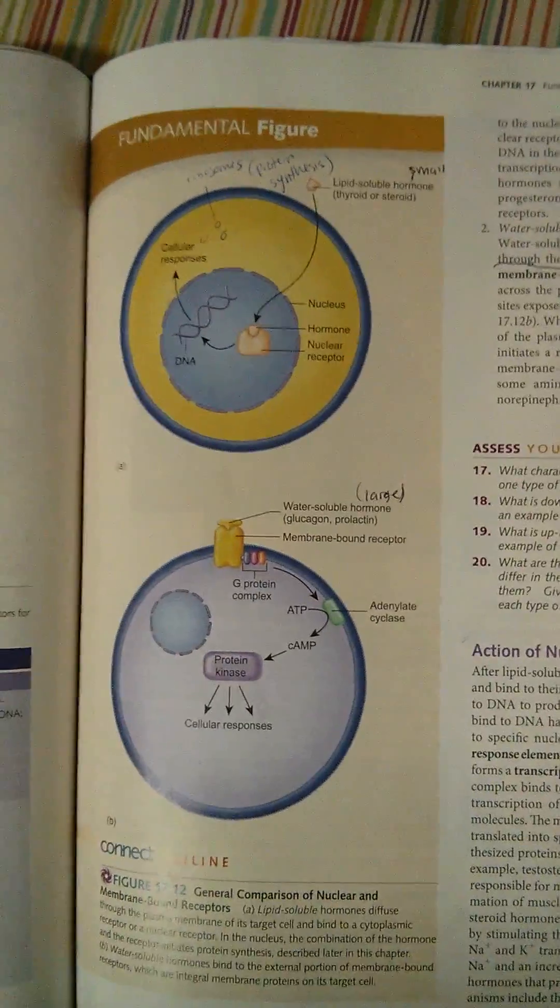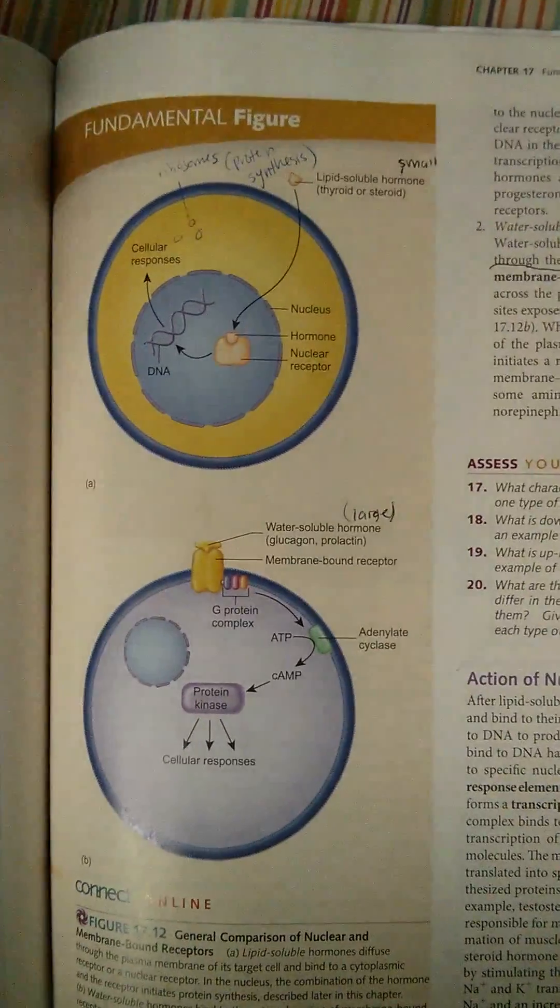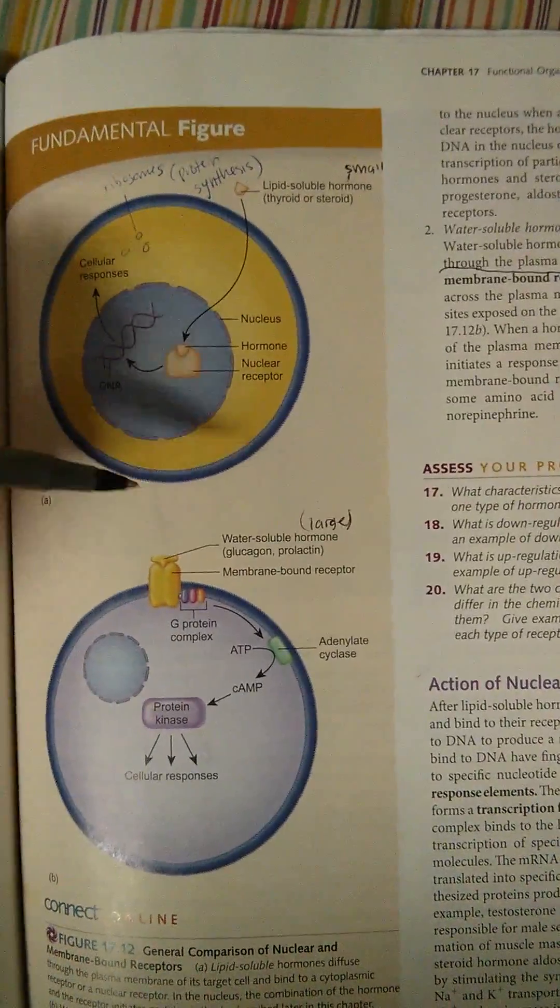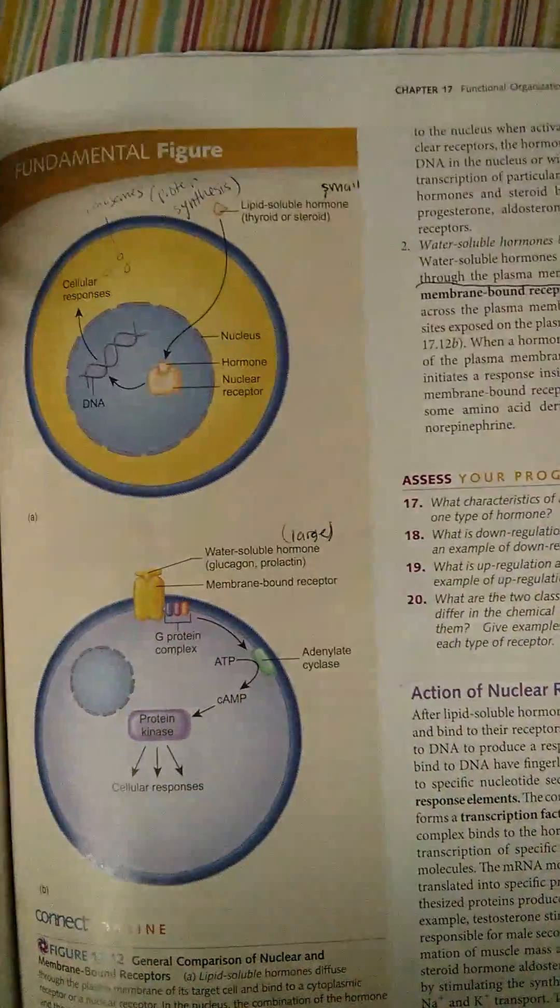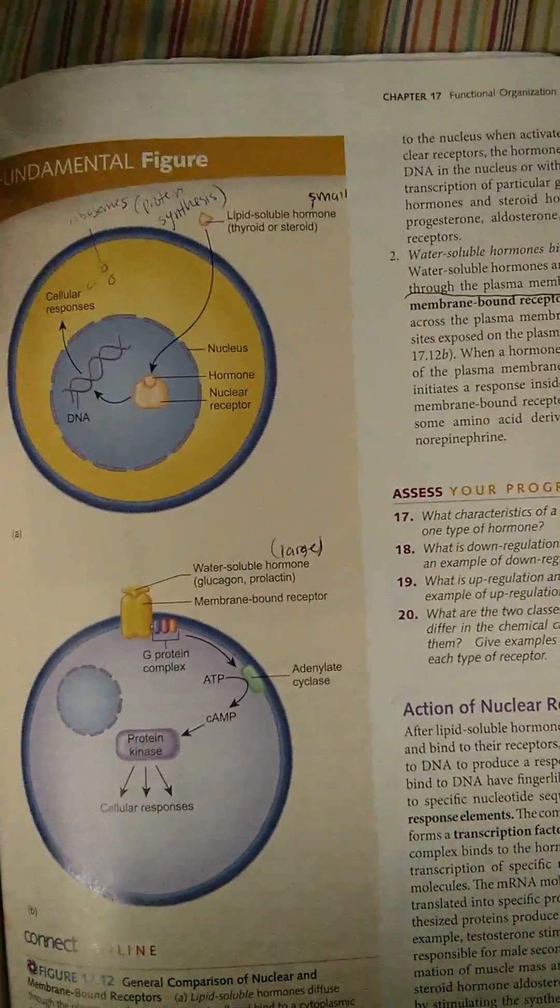Some things don't dissolve in water, they dissolve in fats, so they are called lipid-soluble. So these hormones are certain hormones that either dissolve in water, water-soluble hormones, or lipid-soluble hormones, which dissolve in fats.